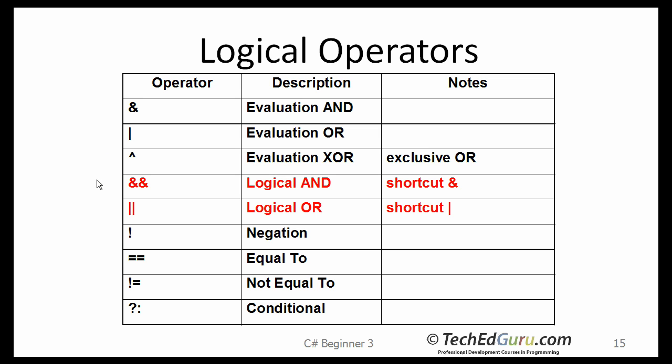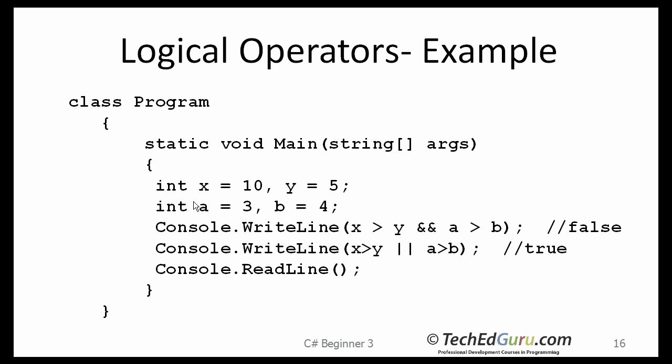The next one is the list of logical operators. I am going to be focusing on two of them, the and and the or operators. Look at this example. We got x, y, a, b, etc. And the question that I want to ask is, is x greater than y, and at the same time, a greater than b? That would be the statement. x greater than y, and a greater than b. That is a false statement.